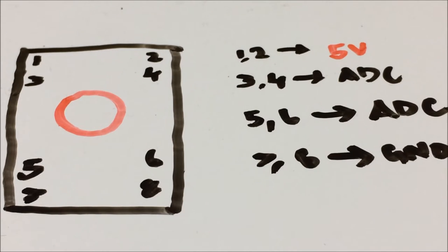So 3 and 4 must be shorted together and must be connected to one ADC or analog-to-digital converter channel of a microcontroller. It can be an Arduino, PIC, or any microcontroller with ADC channels. Similarly, 5 and 6 must be connected together to another ADC channel.